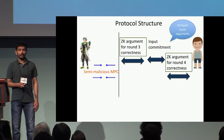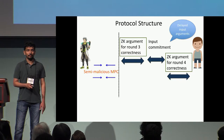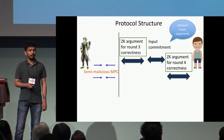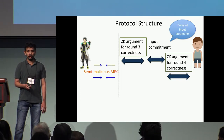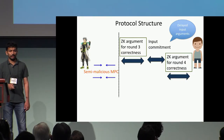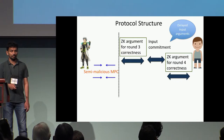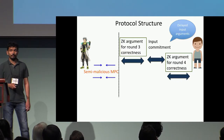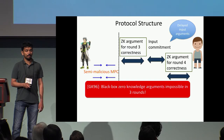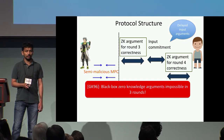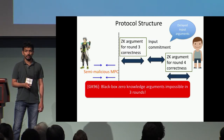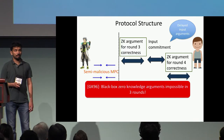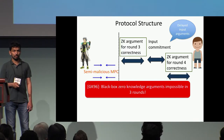Furthermore, we require these commitments and zero-knowledge arguments to have a delayed-input version, meaning the input is known only at the time of the last round. The biggest bottleneck with this approach is that standard zero-knowledge arguments with black-box simulation are impossible in just three rounds. Since parties need to prove correctness of the first round using a three-round ZK argument, this seems problematic.